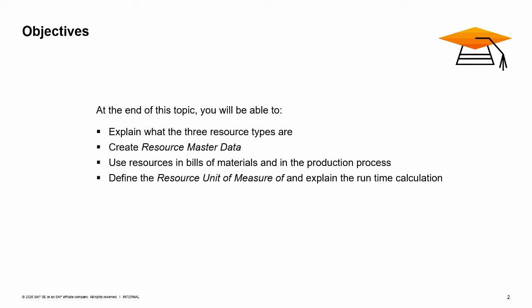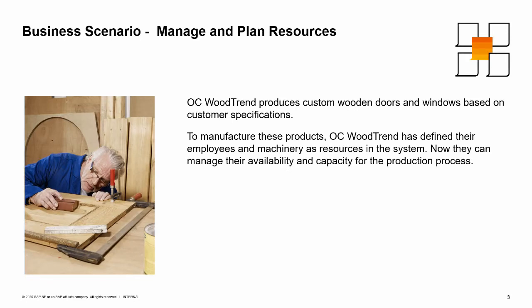Please note that a prerequisite for this topic is familiarity with the topic production concept. In this example, we look at the company OC Woodtrend, which produces custom wooden doors and windows based on customer specifications. To manufacture these products, OC Woodtrend has defined their employees and machinery as resources in the system.